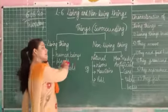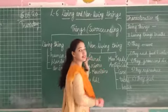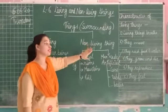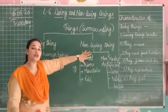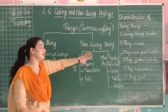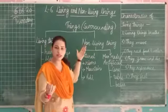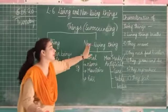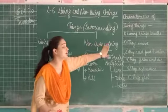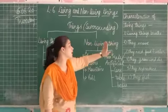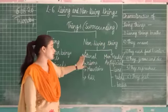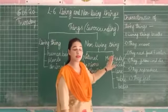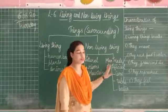Next are non-living things. Non-living things are those which are not living, which do not have any life. They are categorized into two parts: natural, or man-made which is also called artificial.